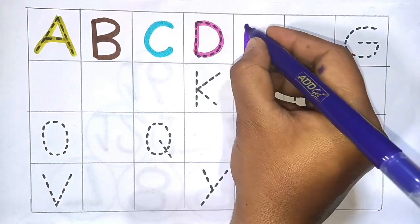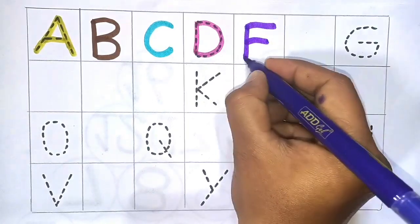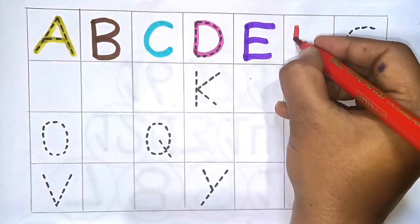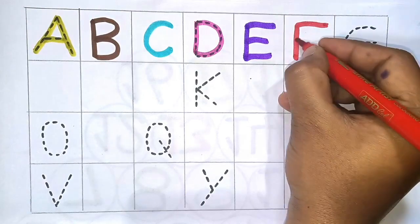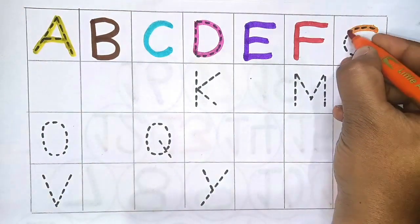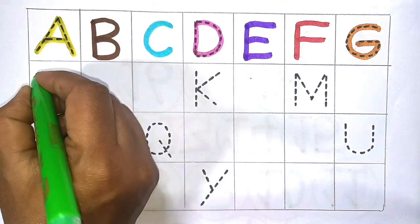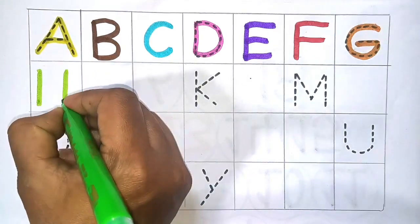Next E, E for elephant, next F, F for fingers, next G, G for green. Next H, H for hand.